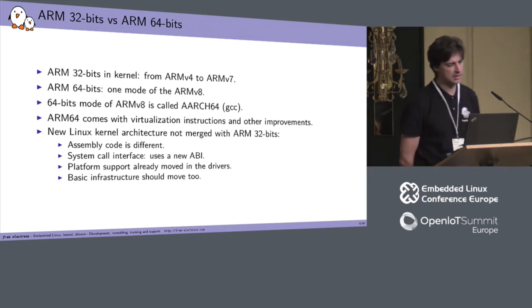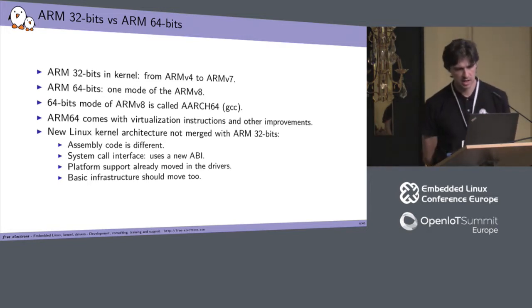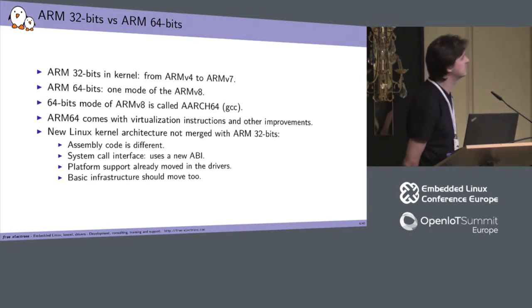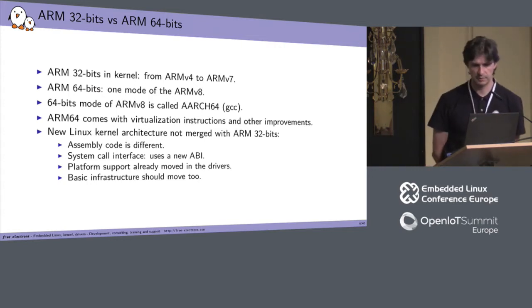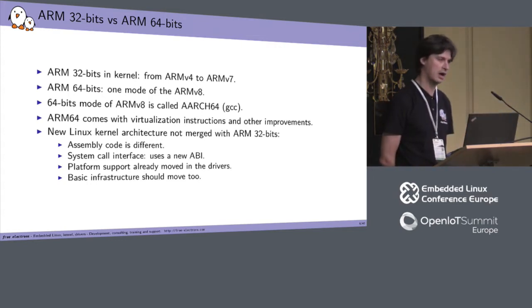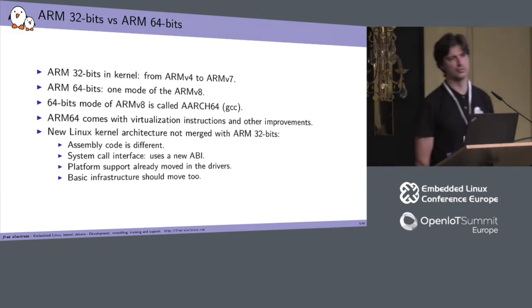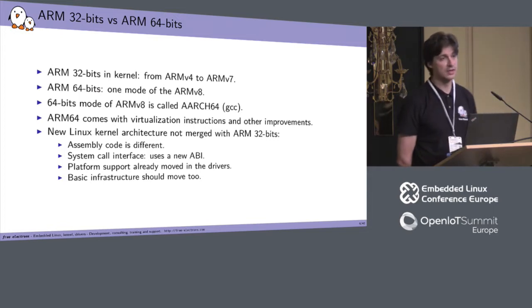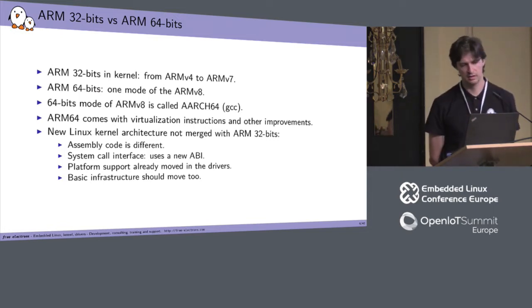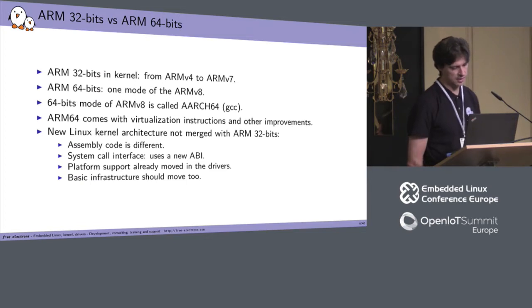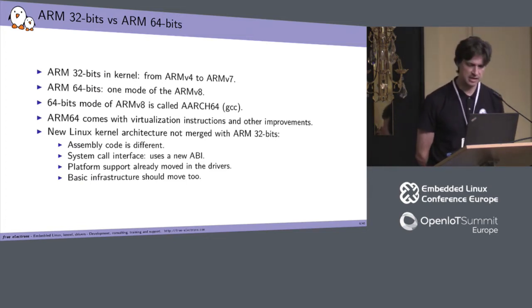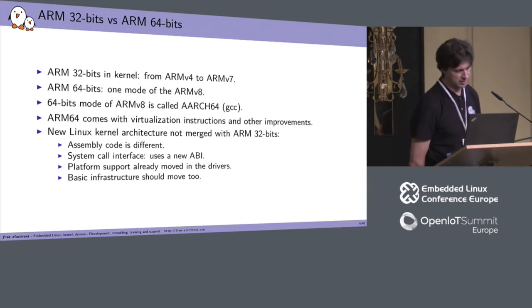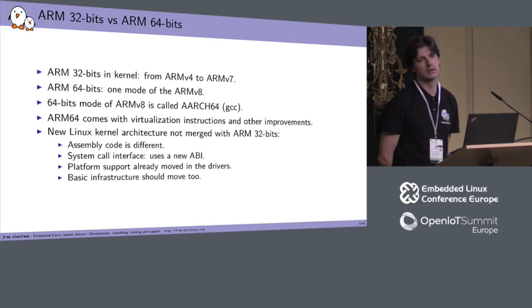In the kernel, ARM 32-bits covers ARMv4 to ARMv7, whereas ARM 64-bits is actually one mode of the ARMv8. The ARMv8 is also capable of running in 32-bit mode. The name of the 64-bits mode is AArch64, but in the kernel we prefer to call it ARM64.